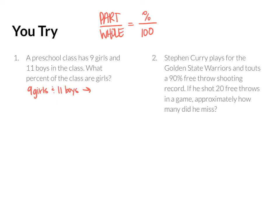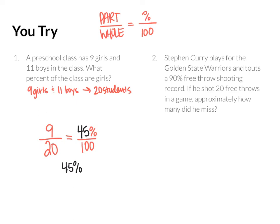For example one, a preschool class has 9 girls and 11 boys. What percent of the class are girls? We're looking for a percent, so I know I'm going to keep the percent out of 100 empty. We know the part of the class that is girls, which is 9, but it didn't tell us how many are in the class total — we can calculate it though. There are 9 girls and 11 boys, so there are 20 total students. My ratio is 9 out of 20 students, not 9 out of 11, because 11 is only the number of boys. That gives me 45% of the class are girls.